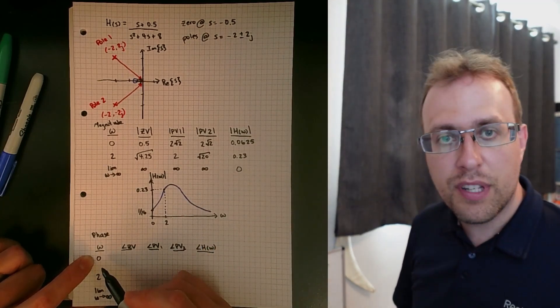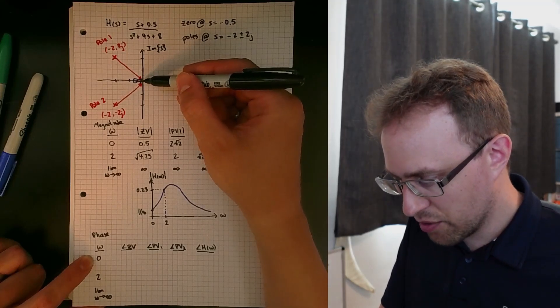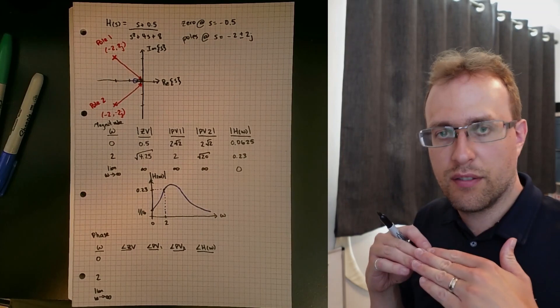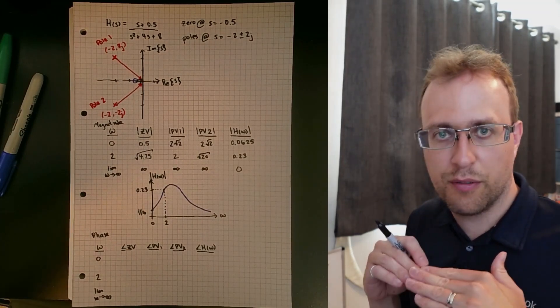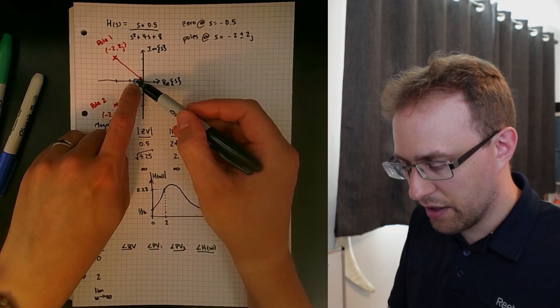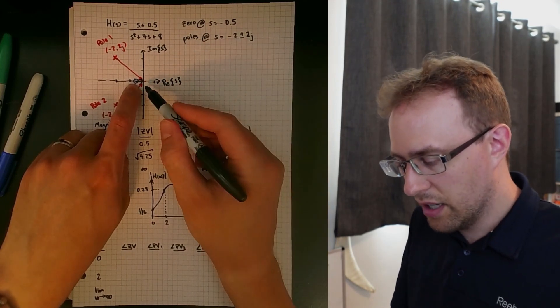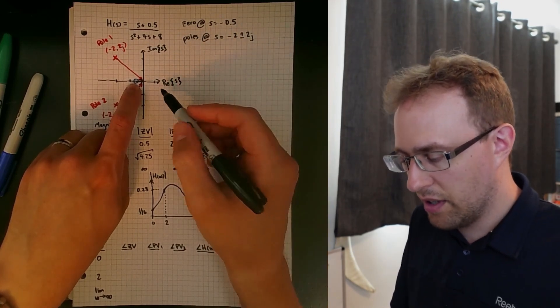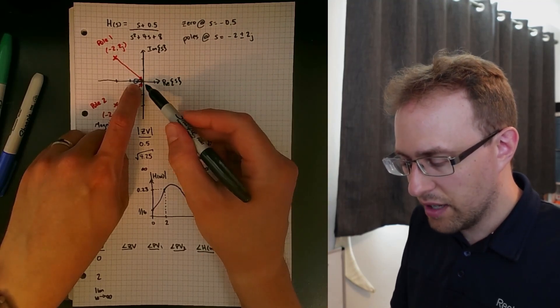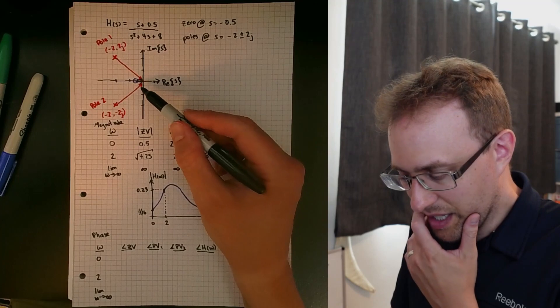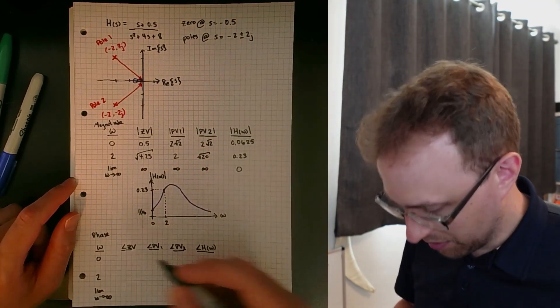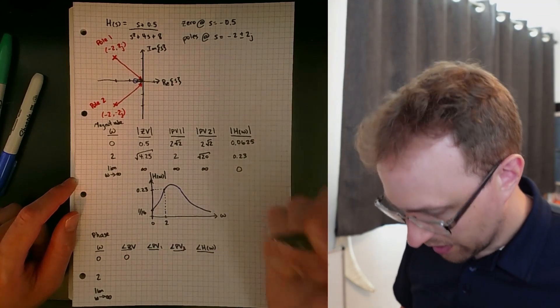For a frequency equal to zero, this is as we have it drawn here. The phases are measured with respect to a line that's parallel to the real s-axis. So here we have a vector that's pointing to the right, in the same direction as the increasing real s-axis. Since we're on the real s-axis, it's really easy to see that the frequency associated with this vector is just going to be equal to zero.